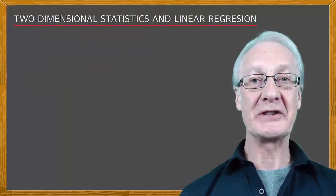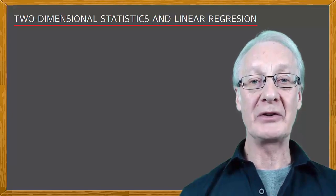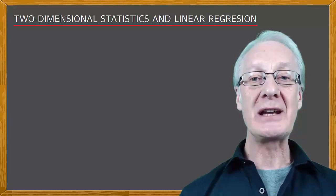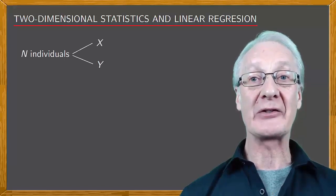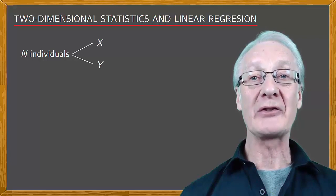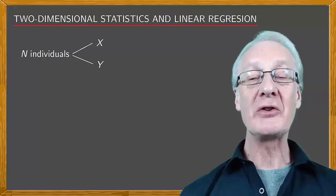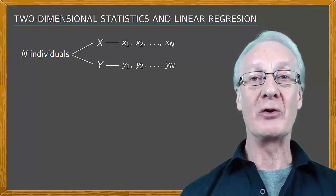In two-dimensional statistics and linear regression, more than one variable is involved. Suppose we're studying a sample of n individuals within a population, and that we've defined two statistical variables x and y. For each individual in the sample, there are two items of data, one for x and one for y. Let's call the data for x: x1, x2, all the way up to xn, and the data for y: y1, y2, all the way up to yn, respectively.